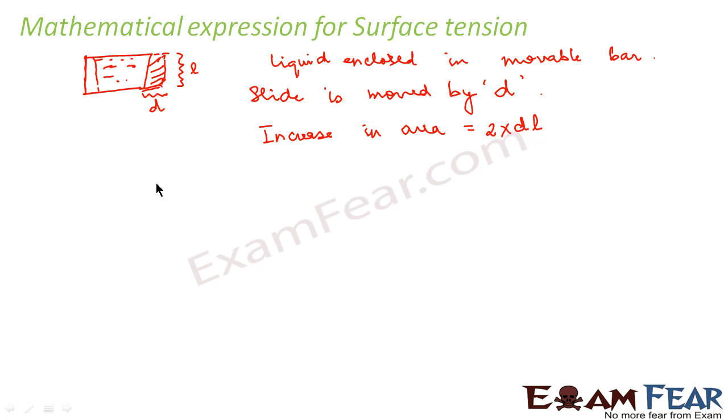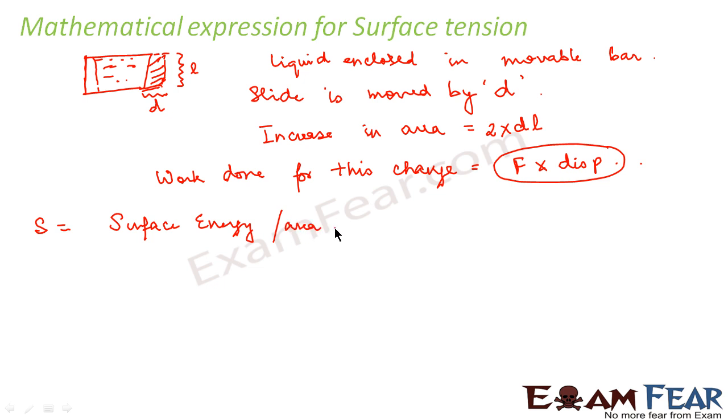So what is the work done for this change? Work done for this change would be equal to force into displacement. Now according to the definition of surface tension, we know that surface tension is equal to surface energy per unit area. Or we can say that surface energy is equal to surface tension into area.